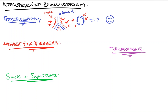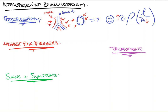So why does this matter? It increases our resistance. Resistance is equal to the resistivity constant times the length of the tubing over A, our cross-sectional area. So as our cross-sectional area goes down — which happens in this case as the bronchioles become constricted — our resistance goes up.